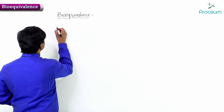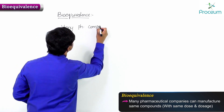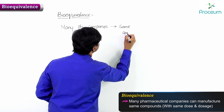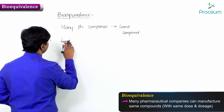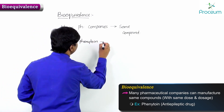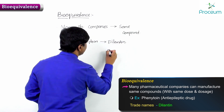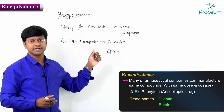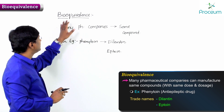Many pharmaceutical companies manufacture the same compound. For example, phenytoin, which is an anti-epileptic drug, can be manufactured with the trade name dilanthin or with the trade name eptoin. Whether you take dilanthin or eptoin, the composition is the same — phenytoin — and with the same dose and dosage form. Now let me explain what bioequivalence means.